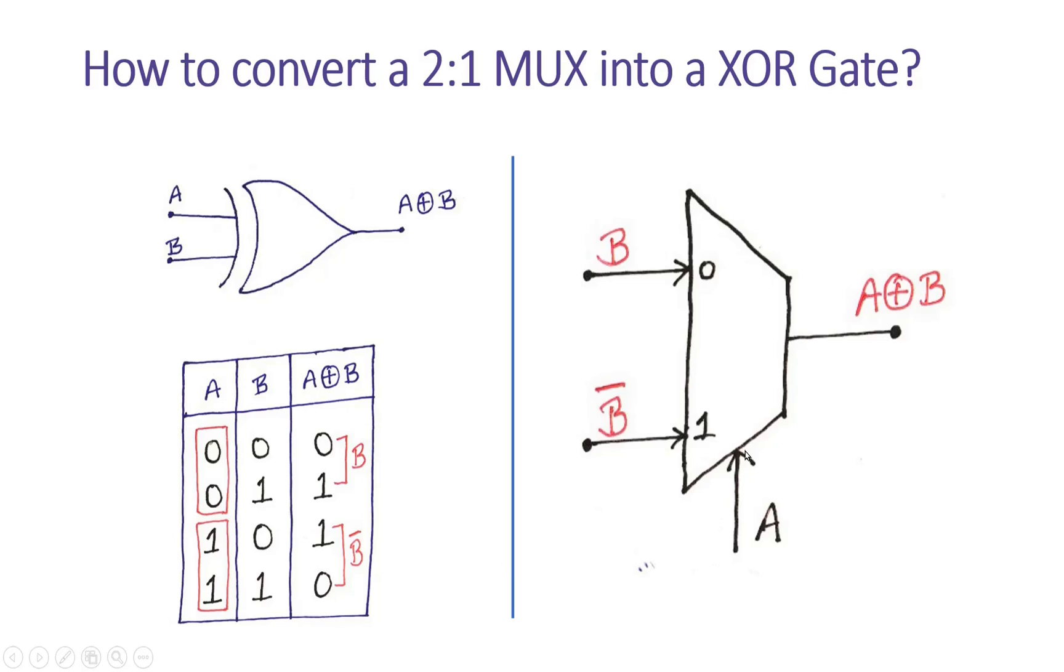I know that when A is 0, I0 will be passed to the output of the multiplexer. Let us see what the expected value is when A is 0. When A is 0, the expected value at the output equals B, so we will apply B at the I0 input of the multiplexer.